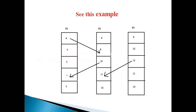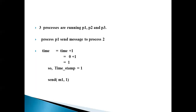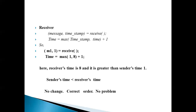See this example. There are three processes running: P1, P2, P3. Process P1 sends a message to Process P2. Time = time + 1. Initially all processes start with time 1, so timestamp = 1. Send M1 with timestamp 1. For the receiver, applying the algorithm: time = maximum of (timestamp, time) + 1. The message timestamp is 1 and the receiver's time is 8. Since the receiver's time 8 is greater than the sender's time 1, the sender's time is already less than the receiver's time — no change, correct order, no problem.